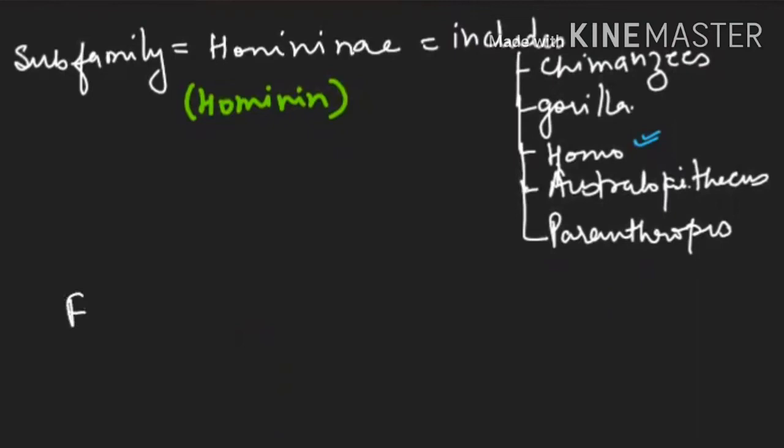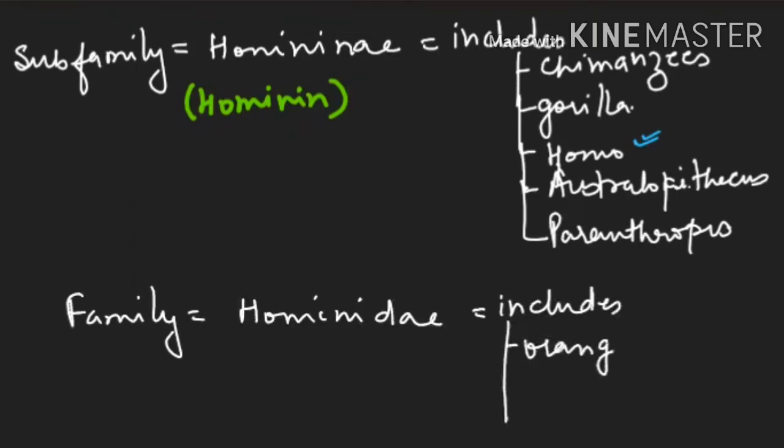We are coming under family. That family is known as hominidae, and hominidae includes orangutan and homo genera also.